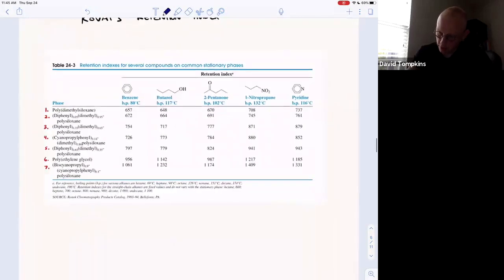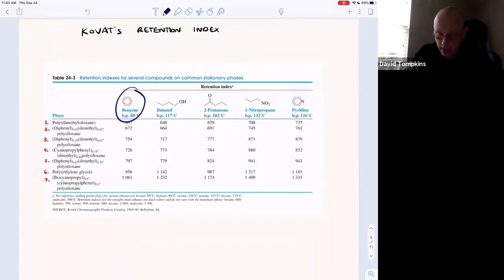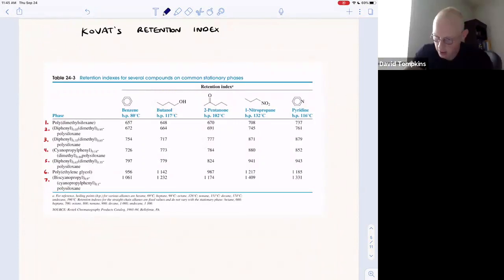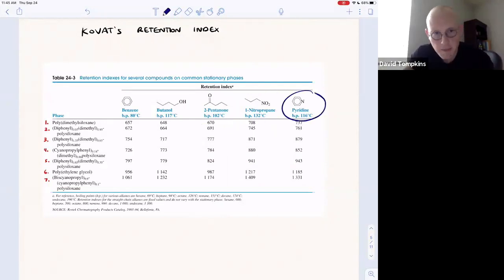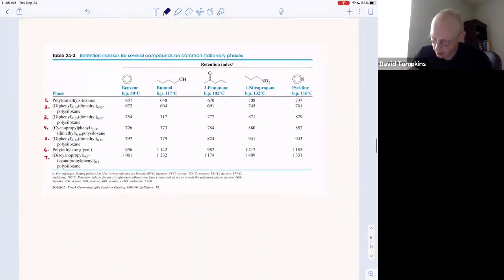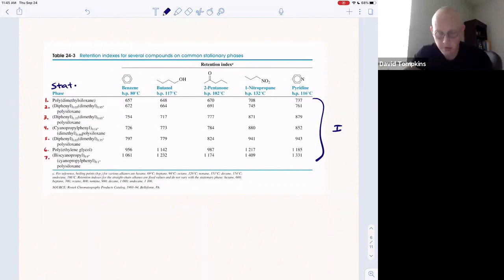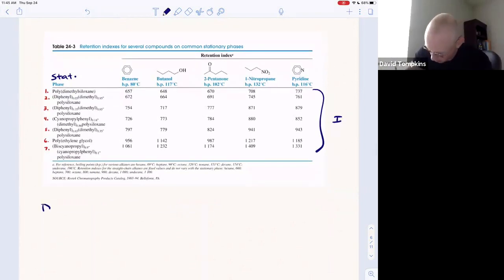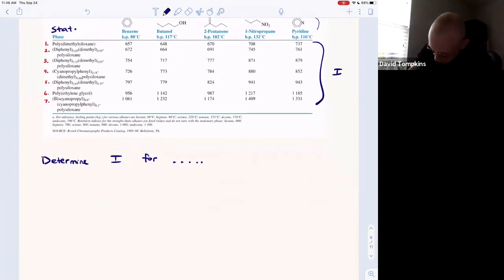Another question that you might be asked is much more conceptual. We won't do much calculation here, but now you're given five different compounds: a hydrocarbon benzene, then a four-carbon alcohol butanol, five-carbon ketone pentanone, and then three-carbon nitropropane and finally pyridine. You're given the Kovats retention indices, so these are all I values for a variety of stationary phases. You could be asked to determine the Kovats retention index, I, for unknown compounds that are related somehow in structure to these.